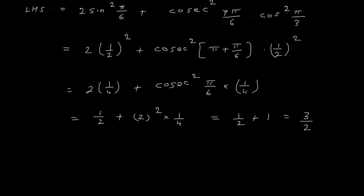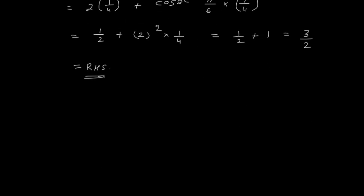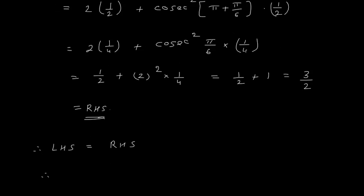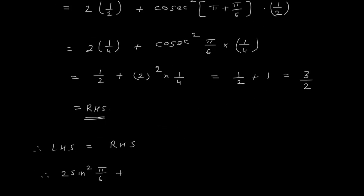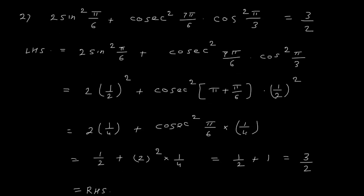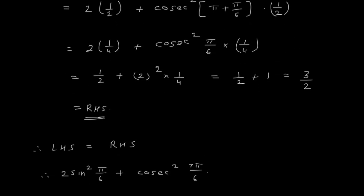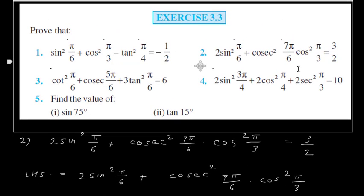Which is our right hand side. So LHS is equals to RHS. Therefore, 2 sin square pi upon 6 plus cosec square 7 pi upon 6 into cos square pi upon 3 equals 3 by 2. This is how we prove the second question.